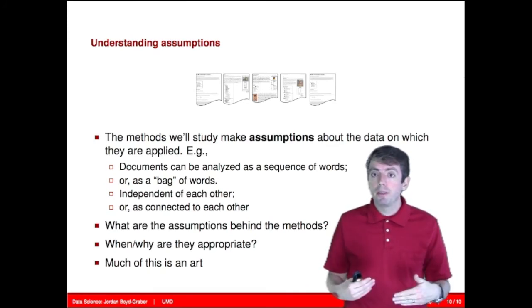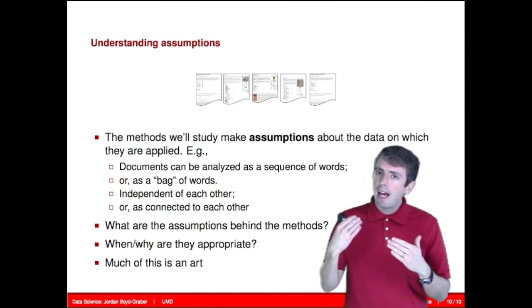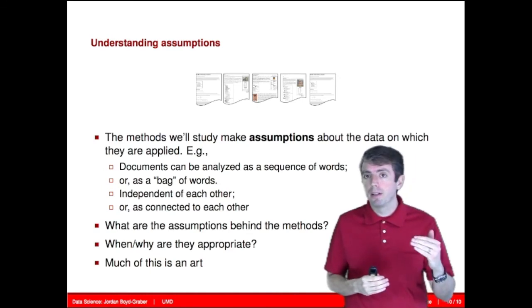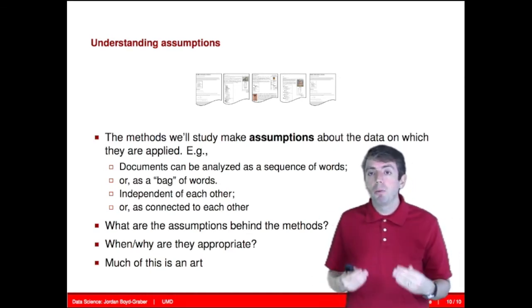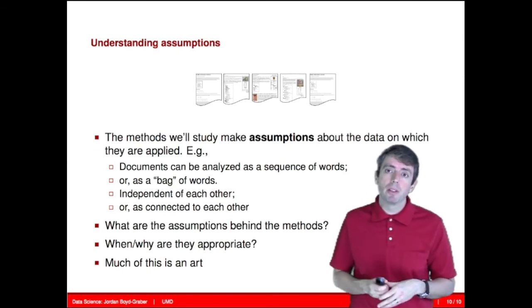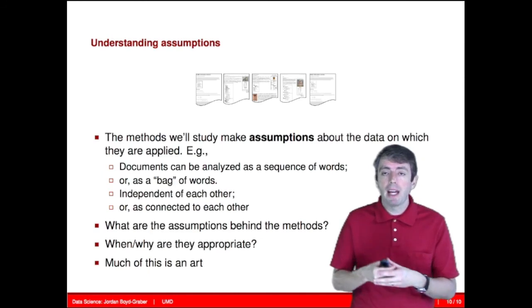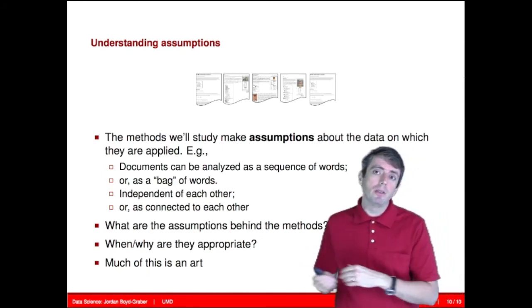You may want to do something less efficient, but that preserves more of the information. How do you know when to make that choice, and when is it justified to go from a jumble of words to actually looking at the sequence of words? And when these algorithms are being used to make important decisions in the world, how do you know whether you have made good choices about the algorithms and the data that can lead to these algorithms being used in ethical and useful ways?